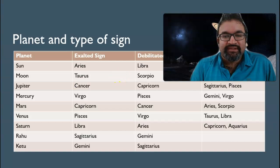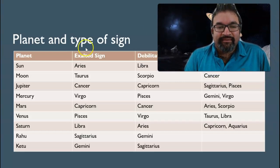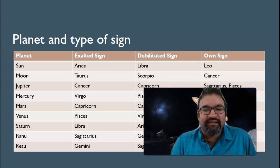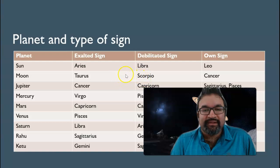This table may look daunting, but let's go over it column by column. The Sun's exalted sign is Aries, and the debilitated sign is Libra. For Venus, the debilitated sign is Scorpio. As you can see, there's a pattern here — the exalted sign and the debilitated sign are usually six signs apart, and I'm going to show you that in a moment.